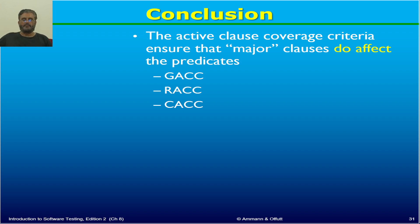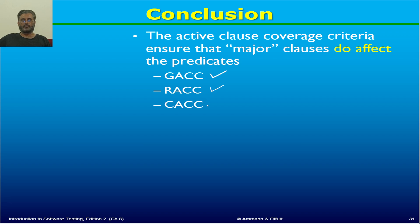To summarize the three criteria: GACC has no strict condition that minor classes have the same value — they may be the same or different. RACC has a strict condition that when the major class value changes from true to false, the minor class values must be the same in both cases. CACC allows minor class values to change only when it ensures that the predicate value also changes from true to false. That was all for today's video; in the next video we will discuss inactive class coverage.